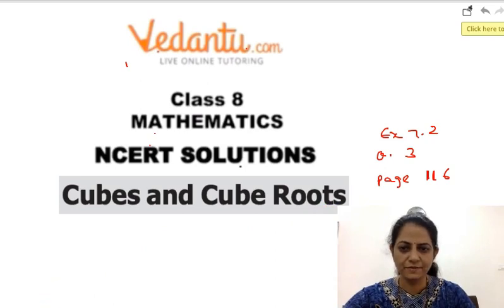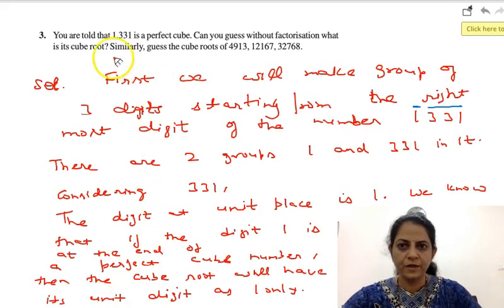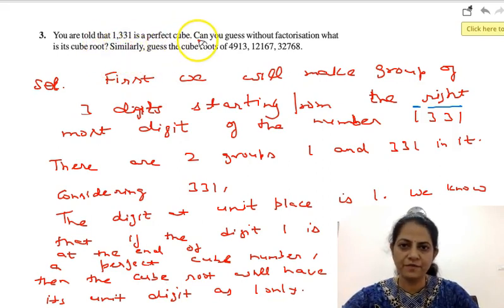The question is, you are told that 1331 is a perfect cube. Can you guess without factorization what is its cube root?